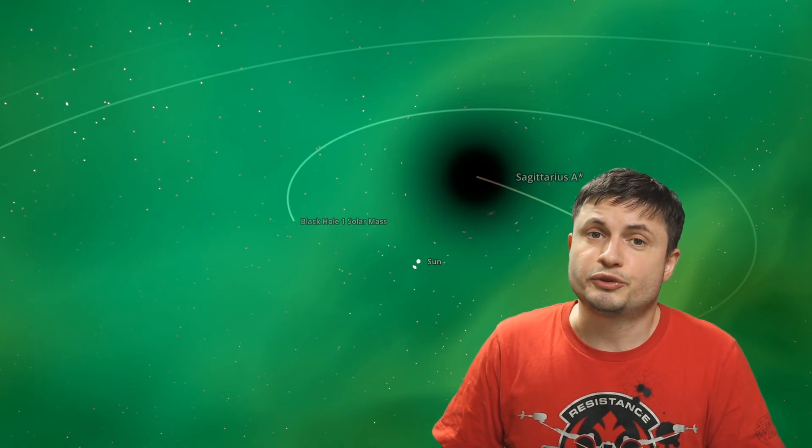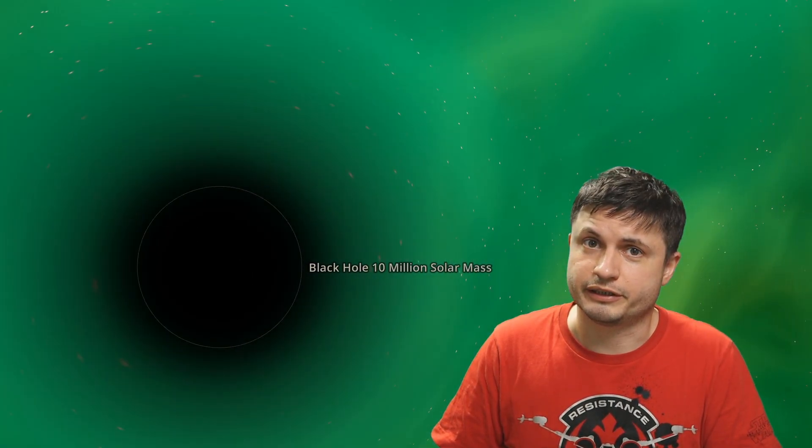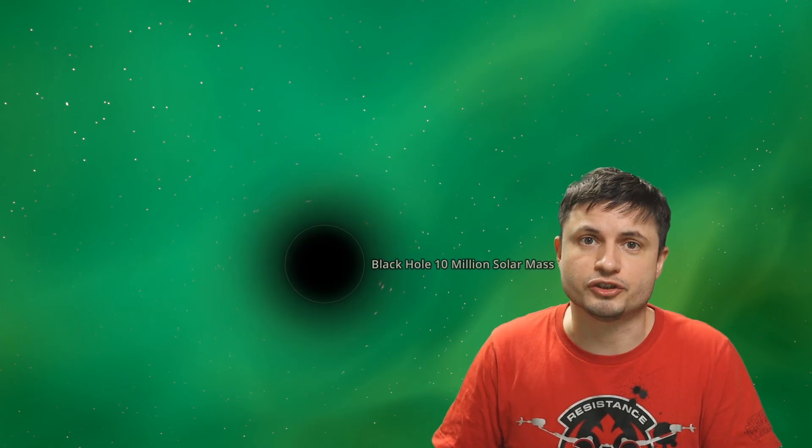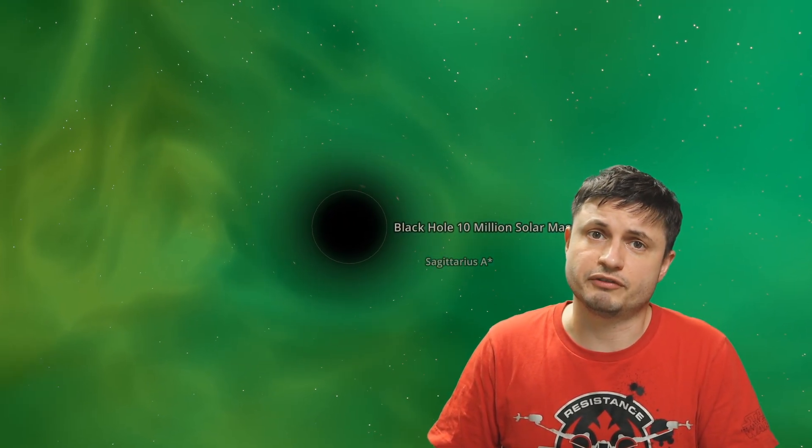But we know that at least one black hole out there, TON 618, which I mentioned in one of the previous videos, seems to beat this limit as well. The current estimate suggests that TON 618 is roughly around 66 billion masses of the sun. Now we don't really know if it's exactly that big, or if it possibly is even bigger than that.